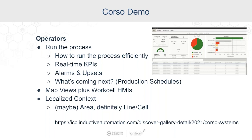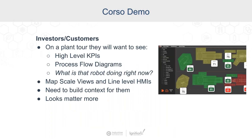We have a more detailed OEE dashboard example — you can find more information on that via the link from a Discover Gallery project at ICC 2021. For investors and customers on a plant tour of a large-scale facility, they're not necessarily going to know what's going on in each piece of equipment. They may want to see high-level KPIs to understand if things are going well or badly, and may need process flow diagrams to understand the flow of material through the process. They may see a robot arm doing welding and ask what it's doing, and we can look at the screen to give them context. Map-scale views and line-level HMIs can work well for them, and we need to build context for those users because they don't have the background of people who work there every day.